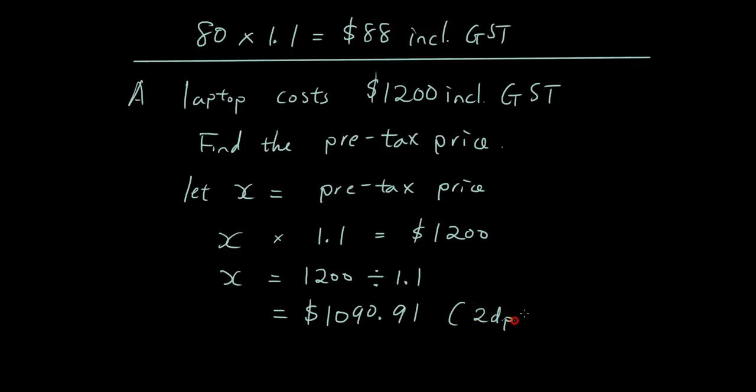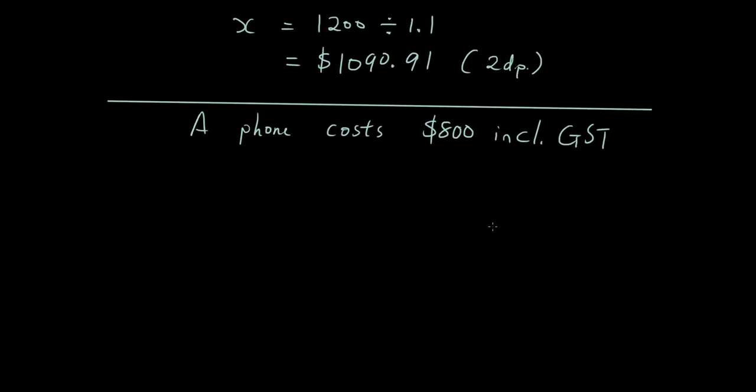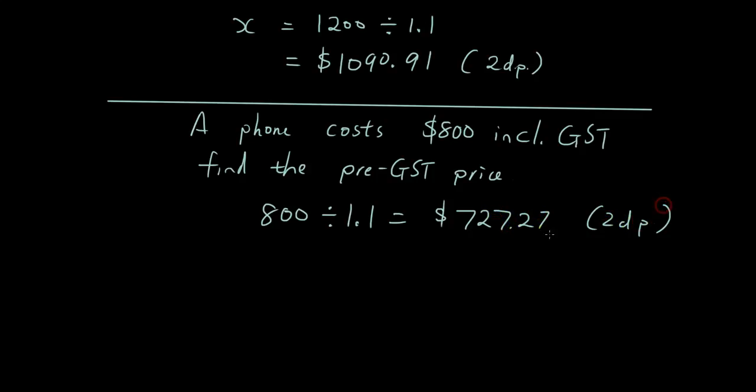So let's do another one. So a phone costs $800 including GST. Find the pre-GST price. Same thing really. So you just go 800 divided by 1.1 and the answer is $727.27 to 2 decimal places.